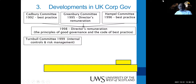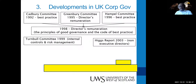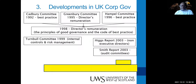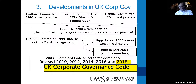The Turnbull Committee Report is very important — it recommended internal controls and risk management to be instituted in the workplace. The Higgs Report of 2003 introduced stringent regulations on non-executive directors, supported by the Smith Report on audit committees. All of these led to what we have today: the UK Corporate Governance Code of 2018, which was formerly called the Combined Code on Corporate Governance.